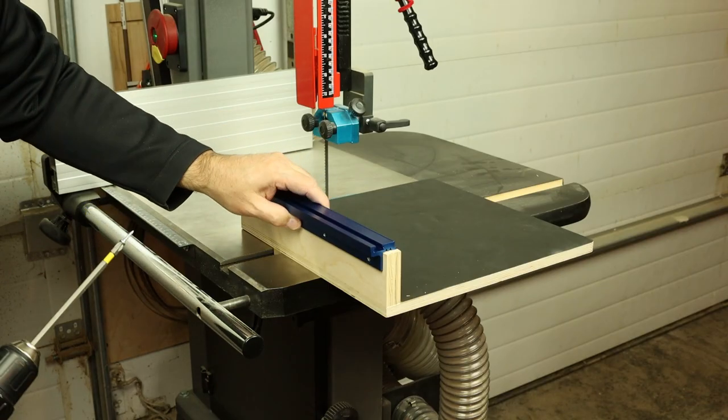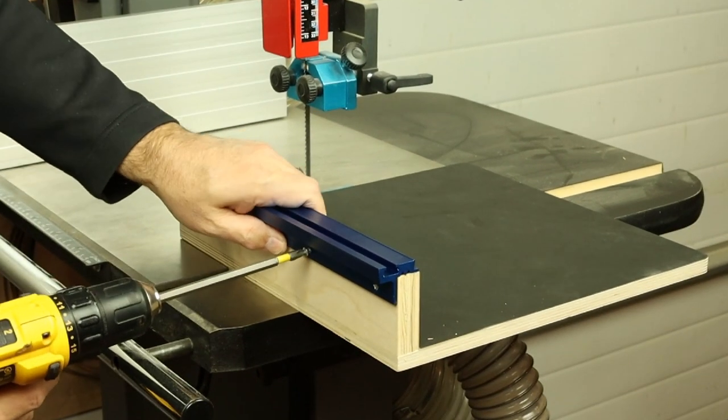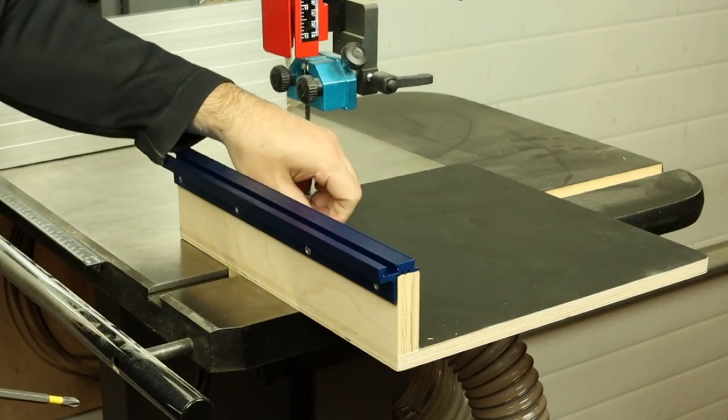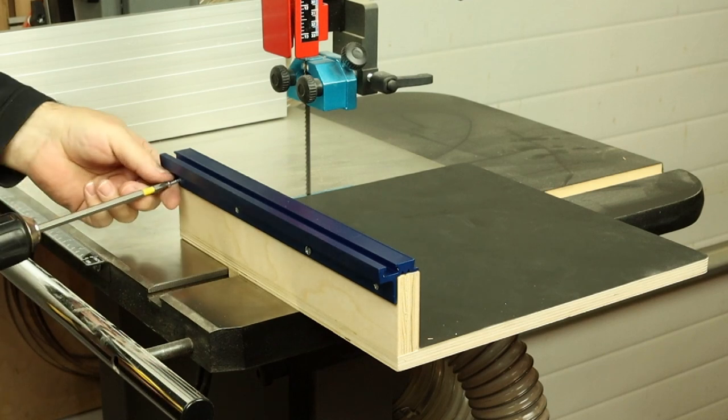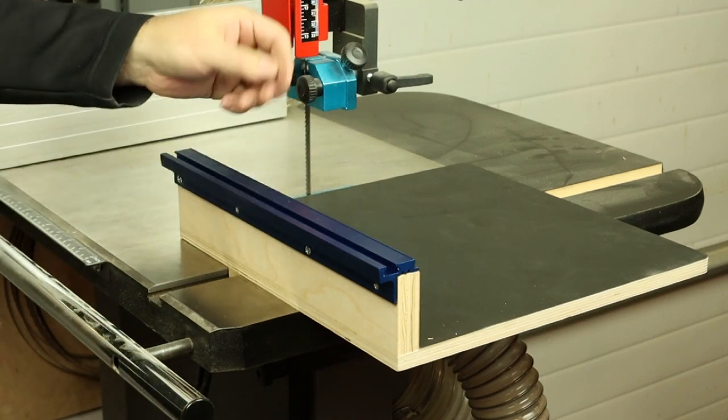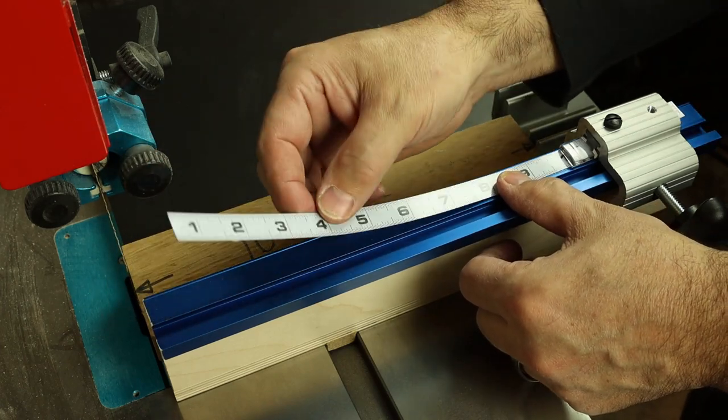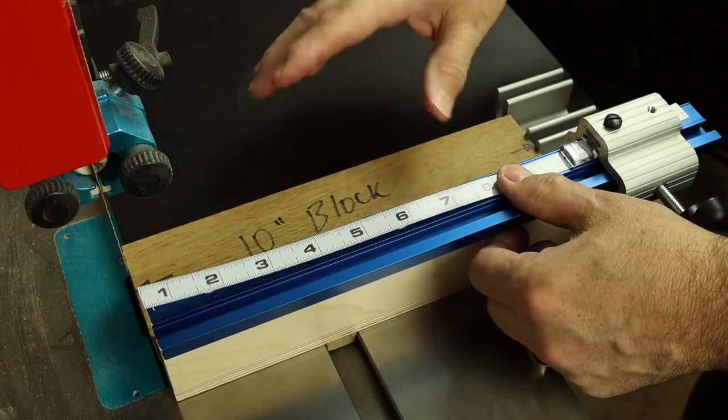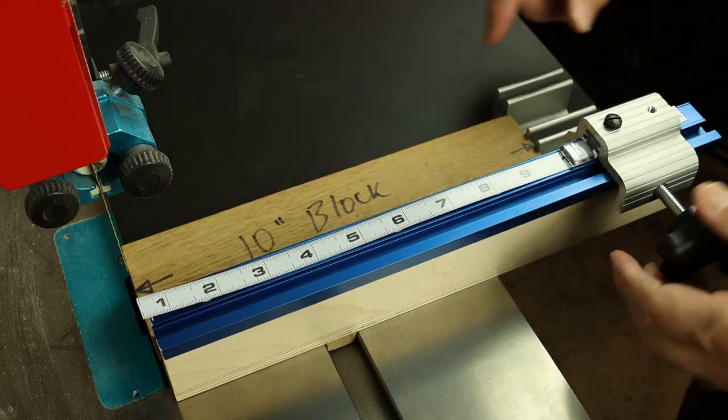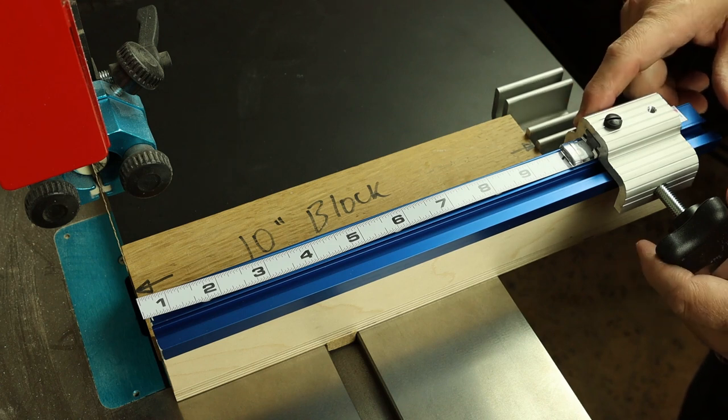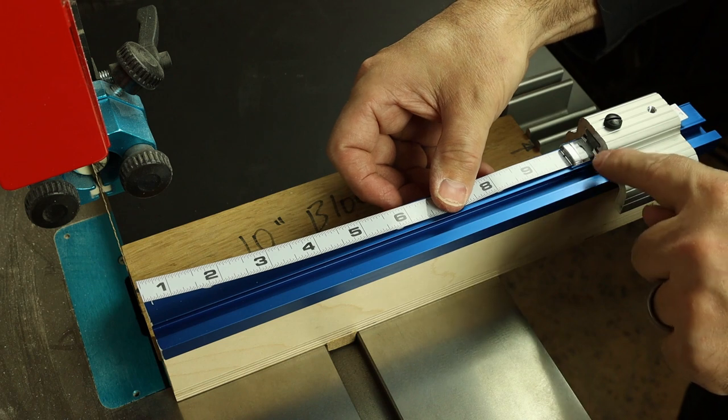And then we'll go ahead and mount the track to the sled. So now we need to fix this tape measure to the fence in relation to the jig, and to do that we've got a known 10-inch block of wood here and the production stop is set to that dimension.